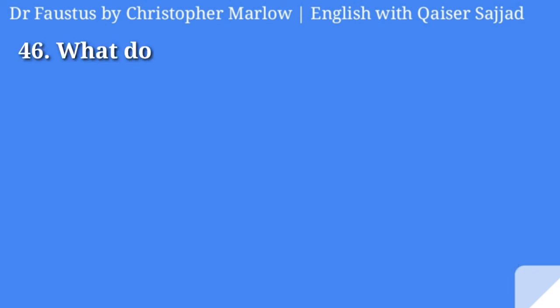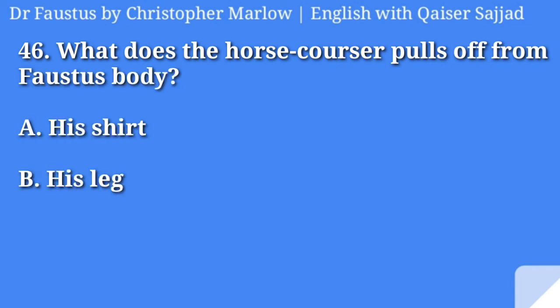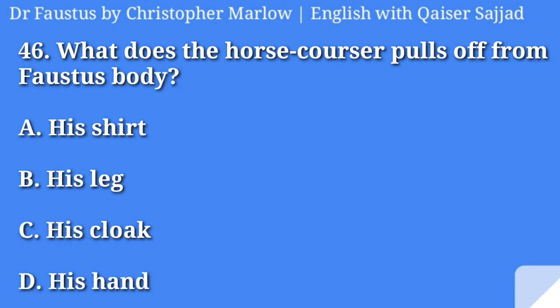What does the horse courser pull off from Faustus's body? His shirt, his leg, his cloak, or his hand? Answer is option B, his leg.